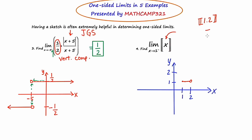Now let's think about the greatest integer of 0.8. So 0.8 is between 0 and 1, and the integer to the left is 0. So 0.8 goes to 0. 0.2 would go to 0. 0 would go to 0. 0.9 would go to 0. The minute you get to 1, it's going to jump up — another step of this staircase. We're asked to find the limit of this as x approaches 1 from the left. The y values are remaining at a very consistent number — the number is 0. So the answer is 0.